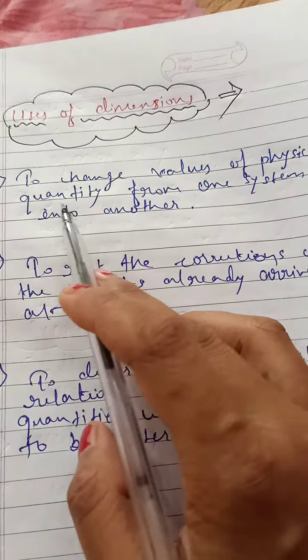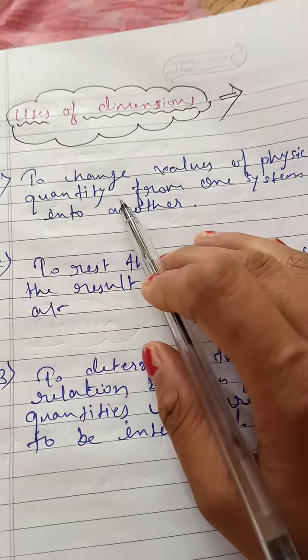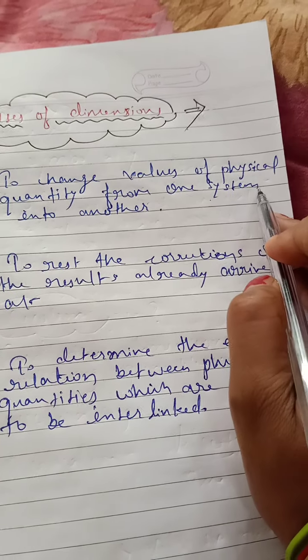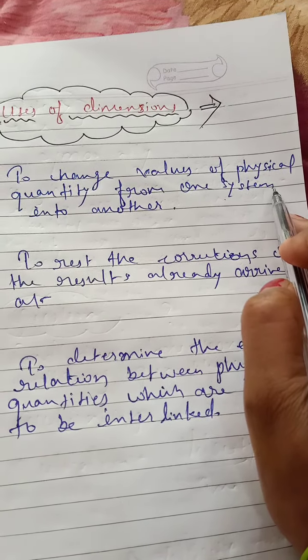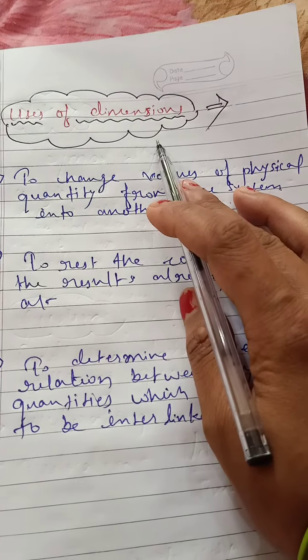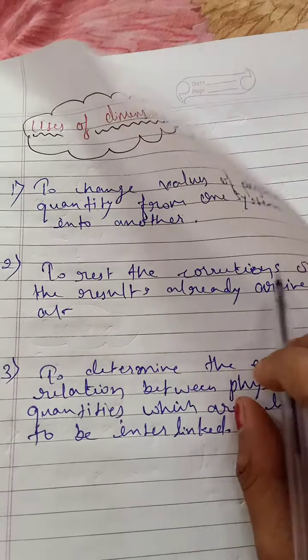And write the uses of dimensions. The first use is to change values of physical quantity from one system to another system. You have to convert SI system to CGS system through the dimension formula.